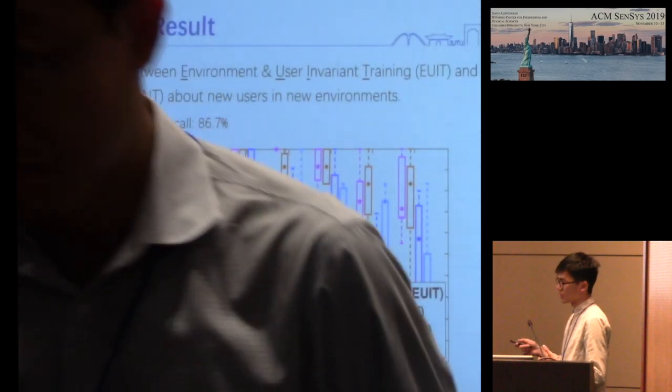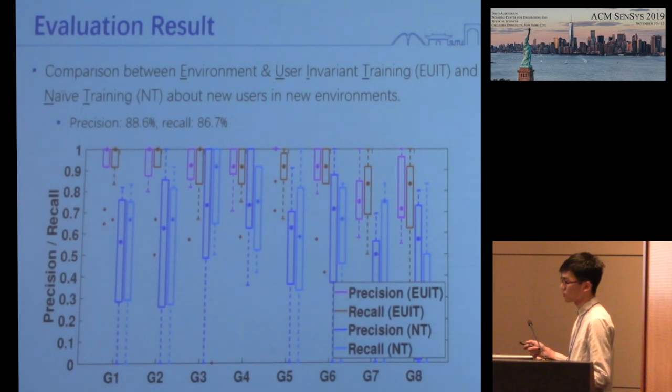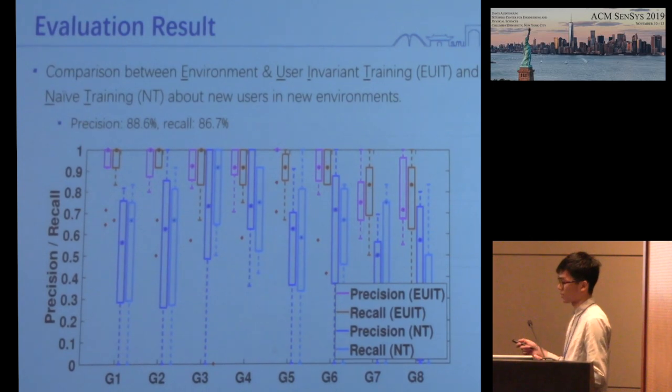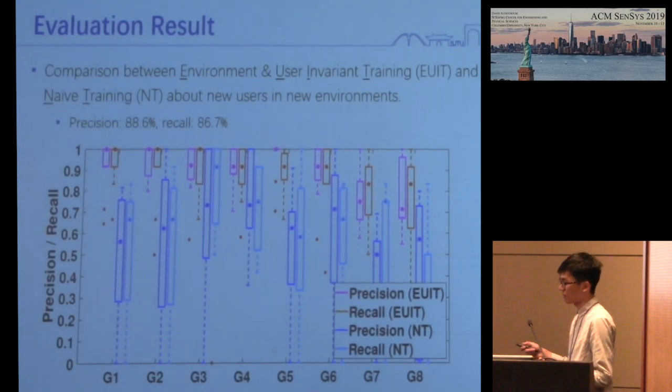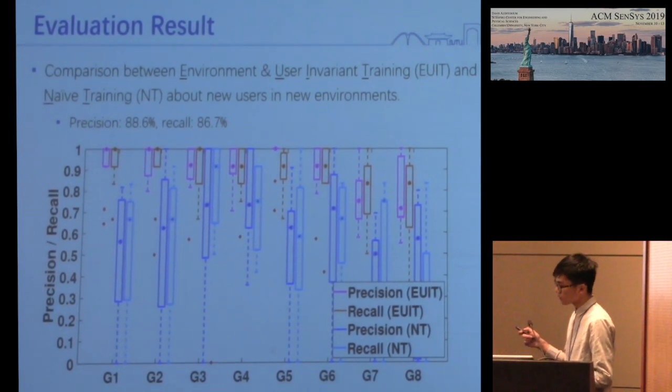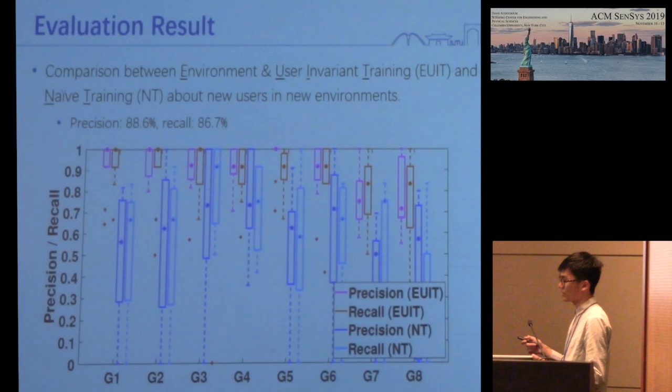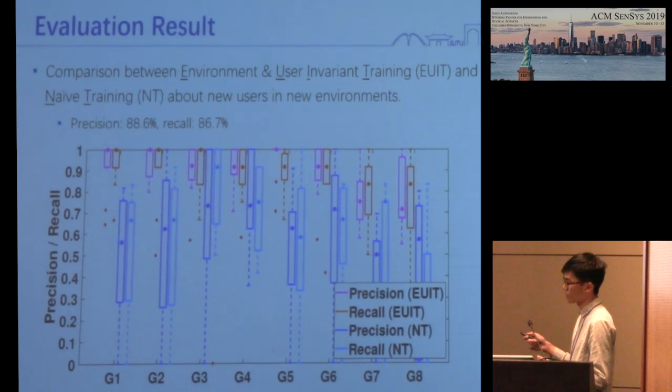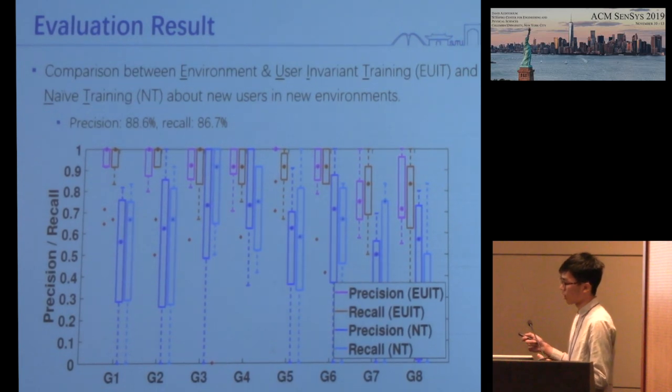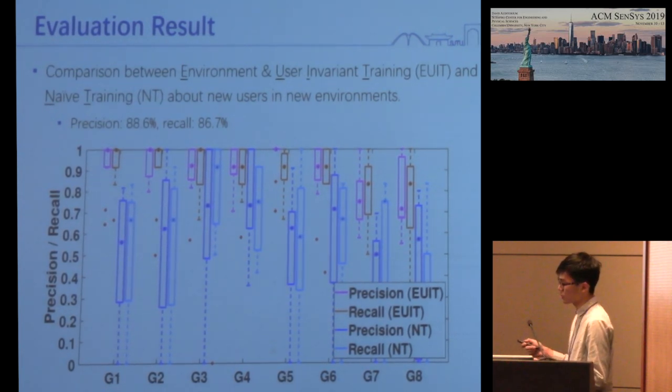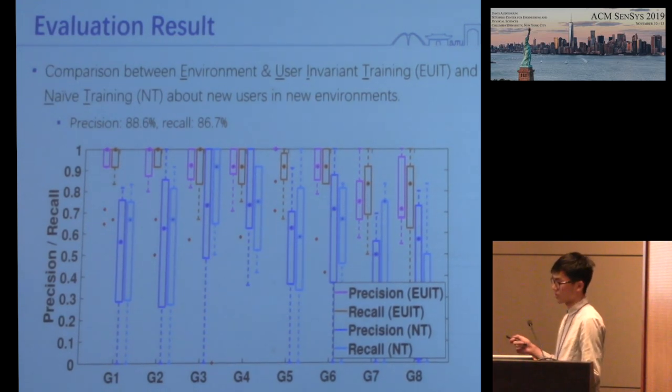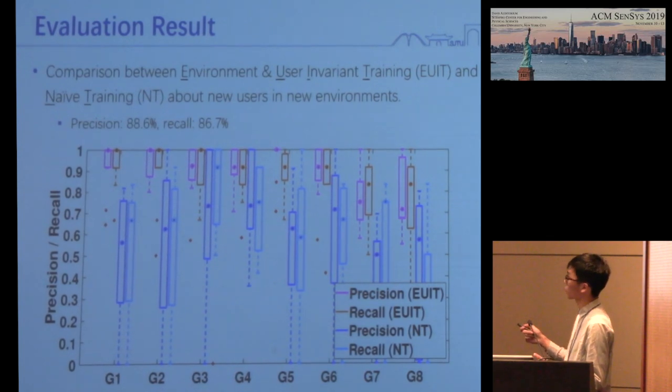We discuss the performance on new users in new environments and demonstrate the effectiveness of adversarial learning. EUIPDR means environment and user-independent training. EUIPDR achieves an average of 88.6% precision and 86.7% recall for new users in new environments, which is much higher than the average of about 56% precision and recall achieved by naive training.